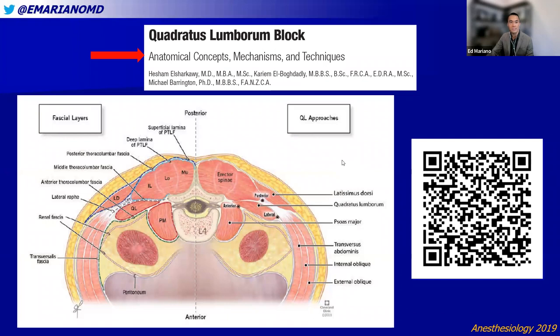The next highest body of evidence involves approaches centered around the quadratus lumborum muscle anatomically. There are three techniques used in common nomenclature: a posterior approach, a lateral approach, and an anterior quadratus lumborum block.